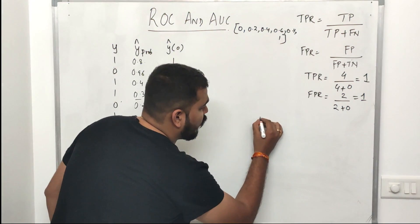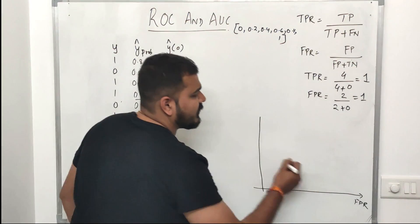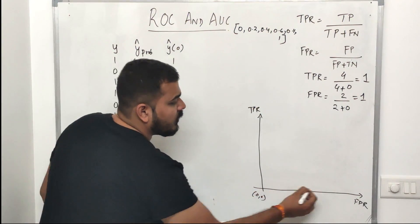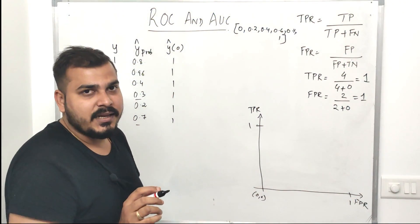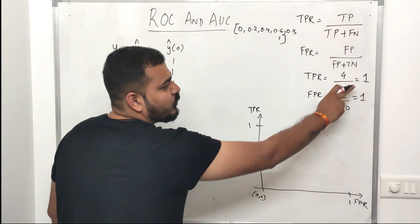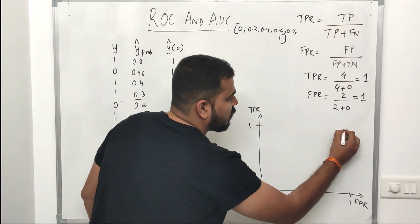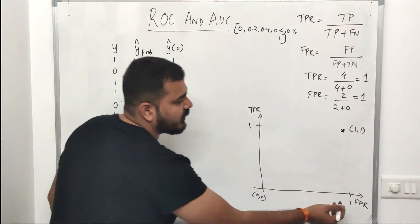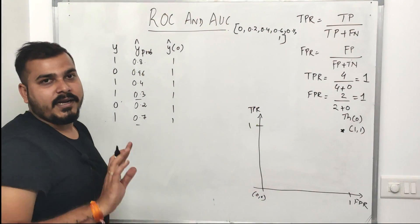Now I construct a graph: on the x-axis I have false positive rate, on the y-axis I have true positive rate. This is (0,0). When my threshold was 0, I got true positive rate = 1 and false positive rate = 1. If I plot this point, it comes at (1, 1).